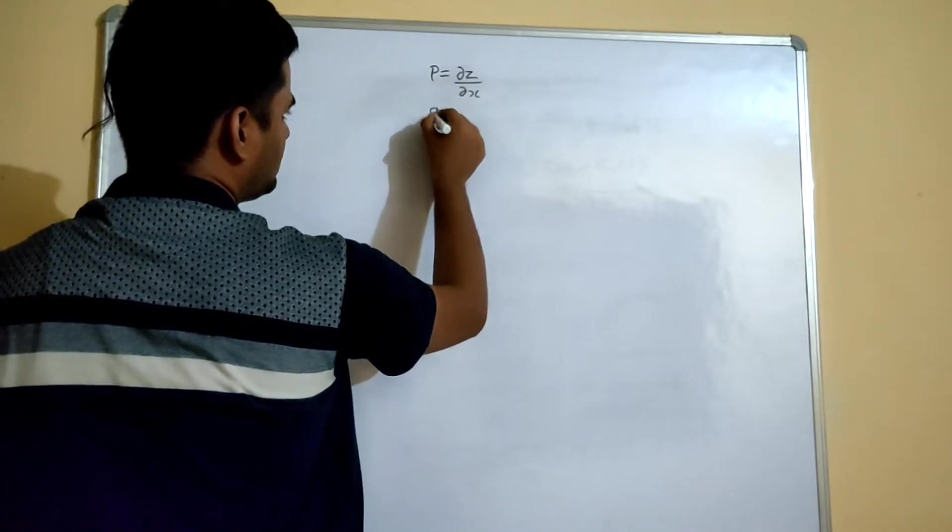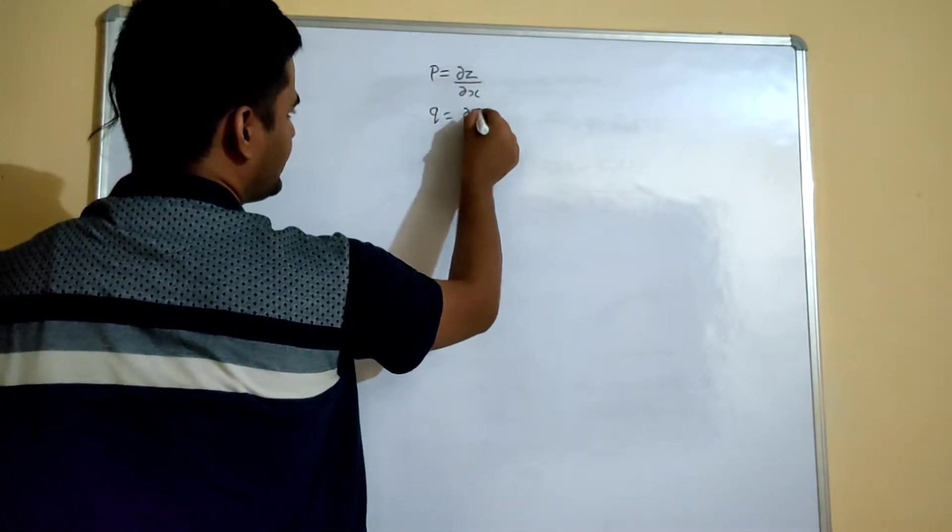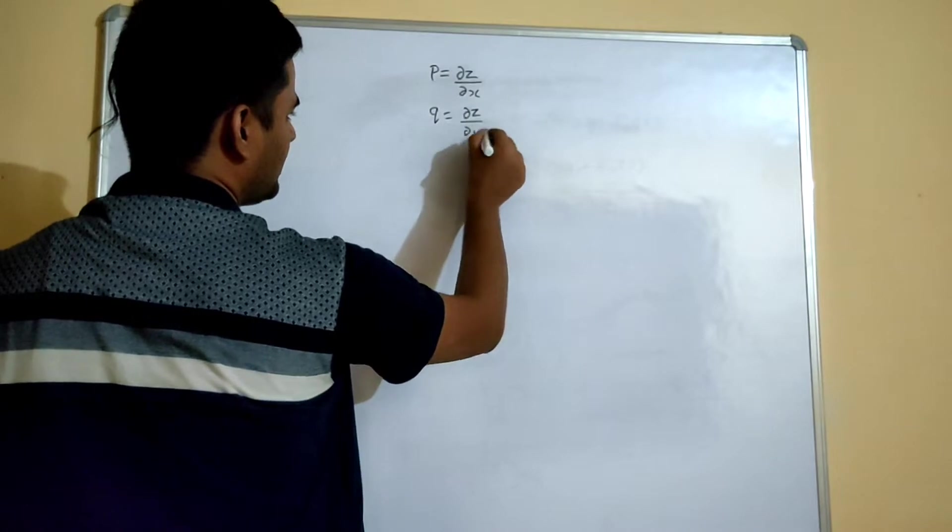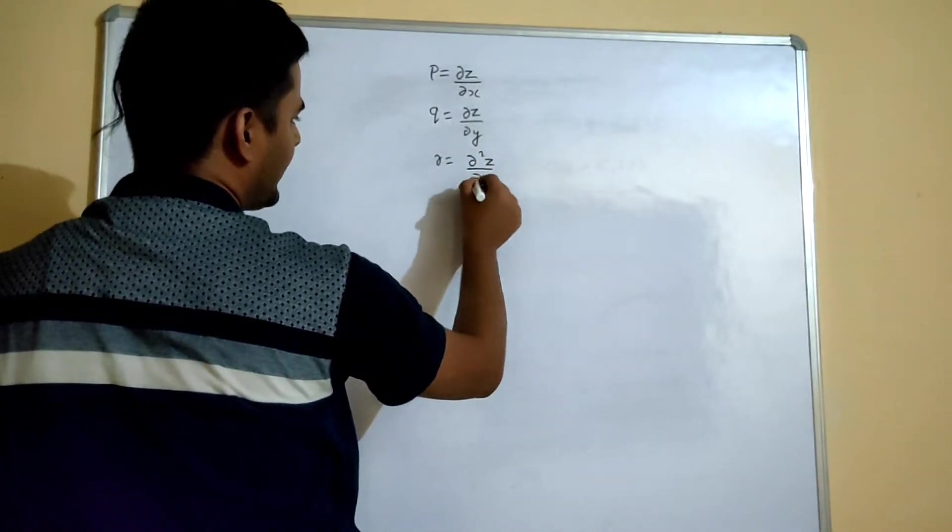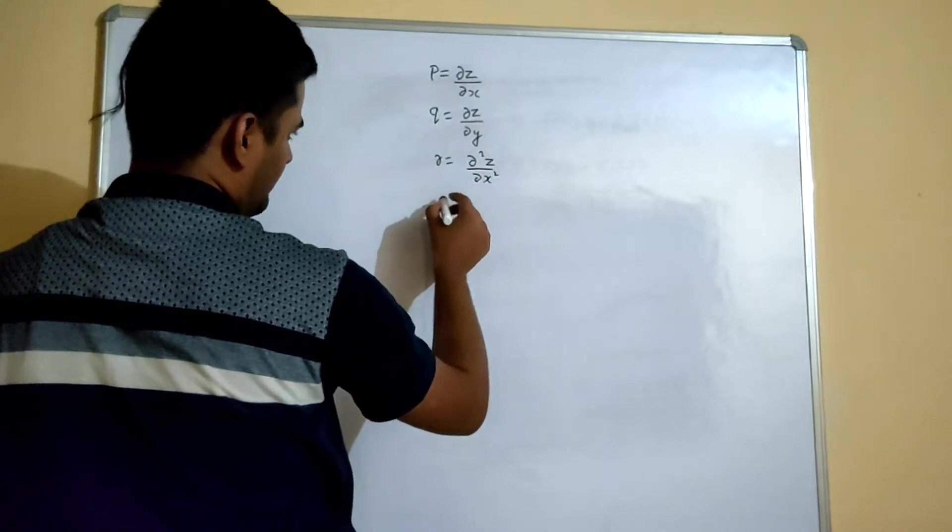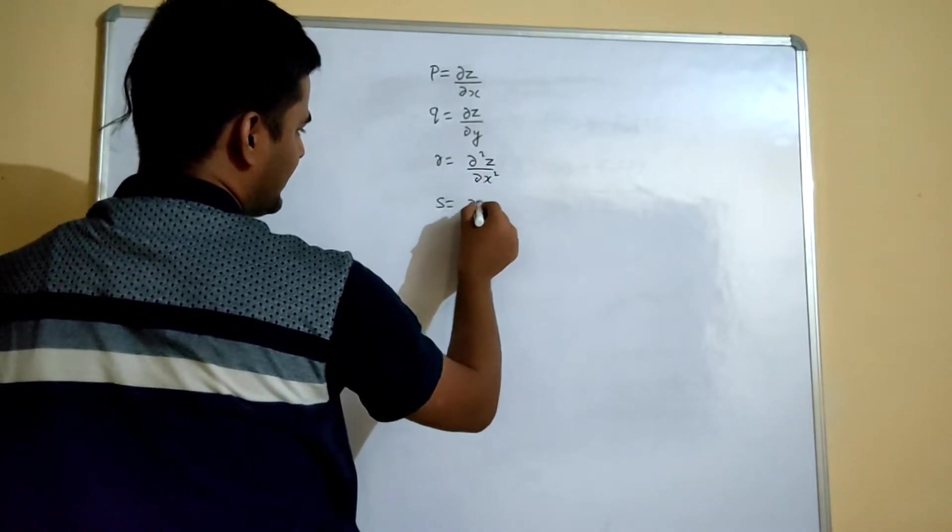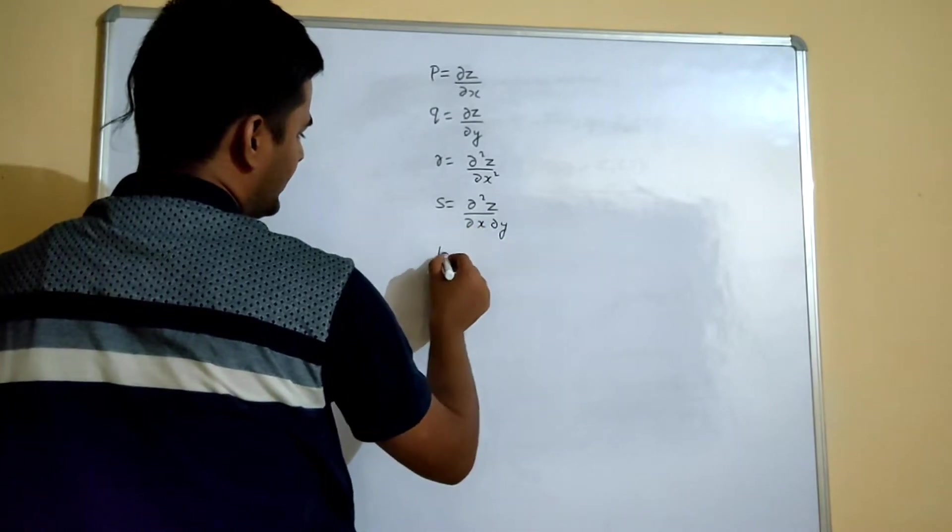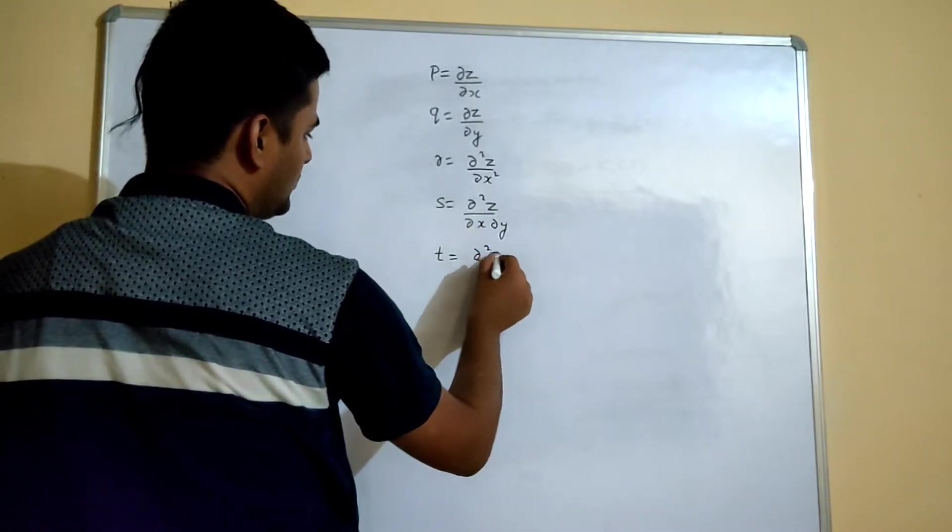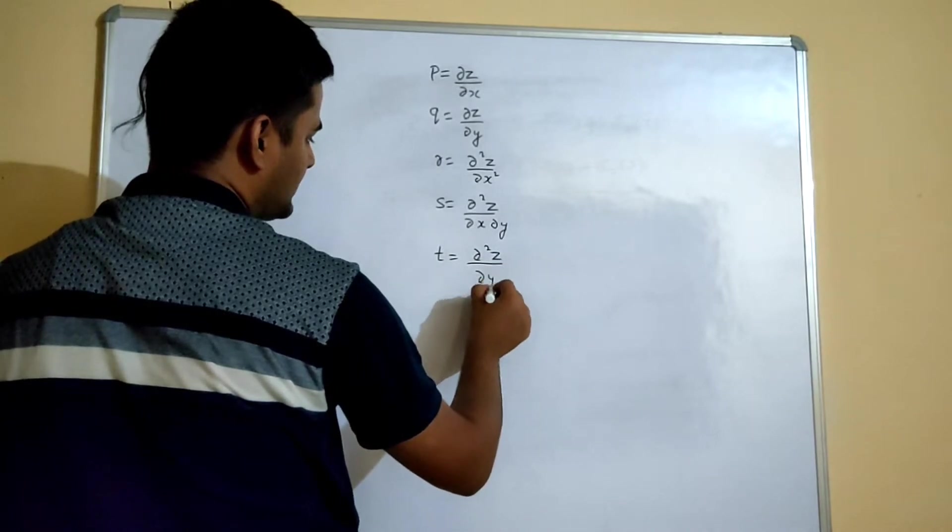Your Q is your del z by del y. Your R is del 2z by del x square. Your S is del 2z by del x del y. And your T is del 2z by del y square.